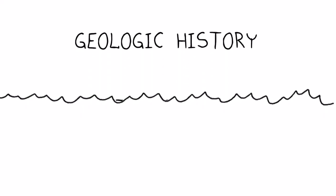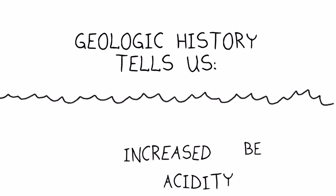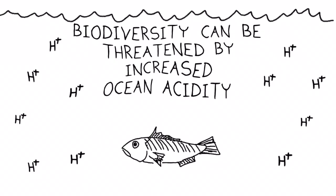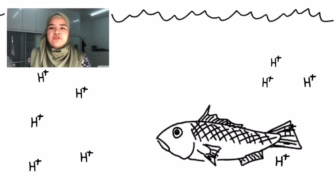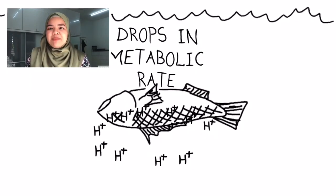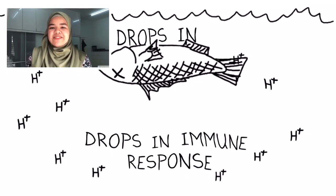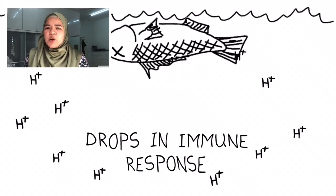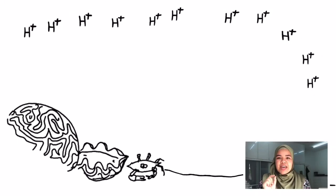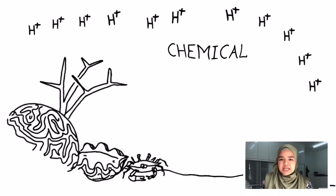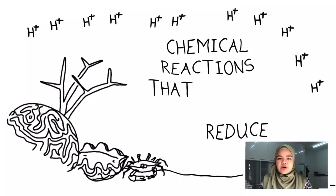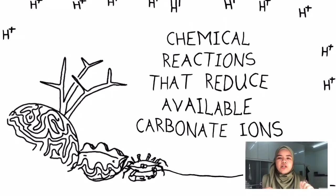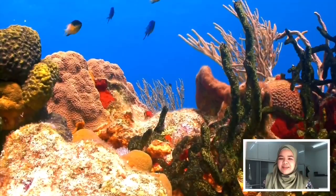Geologic history tells us that biodiversity can be threatened by exposure to increased acidity in the oceans. There is a huge range of harmful consequences, including drops in metabolic rate or drops in immune response to other organisms such as parasites or bacteria in the environment. We know that drops in pH can cause destruction of coral by triggering chemical reactions that result in an overall drop in the amount of carbonate ions available.